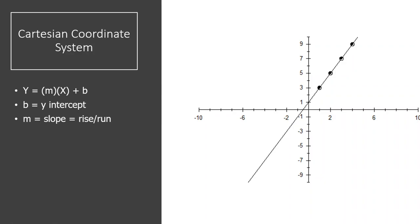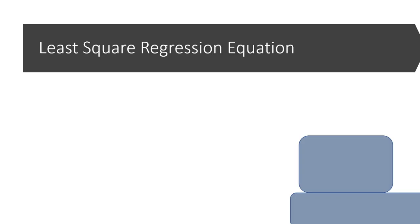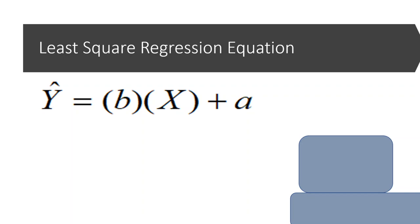We aren't going to use the letters mx + b the same way — m kind of looks like mean, so we don't use that notation. However, if you're familiar with y = mx + b, you're pretty much on the right path because we haven't really changed it much. It's still y equals the slope times x plus your y-intercept. The least squares regression equation looks like this: instead of mx + b, it's y-hat equals bx plus a.